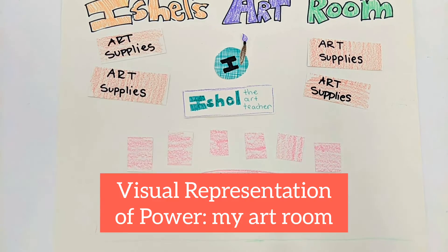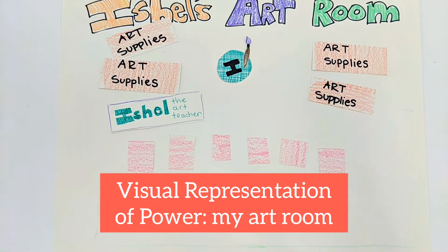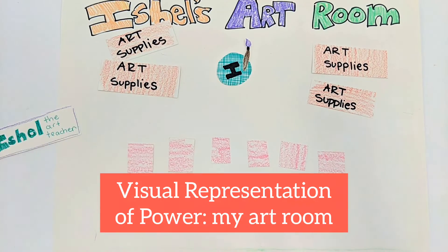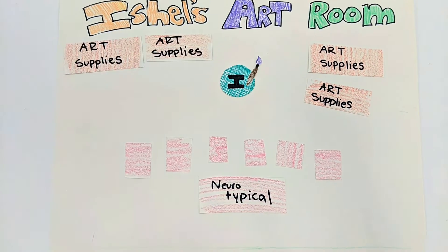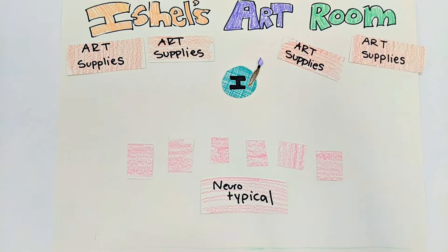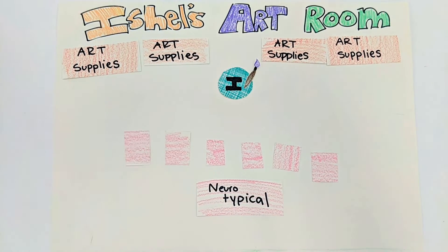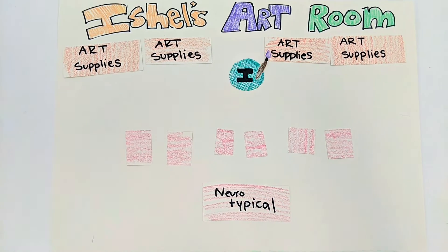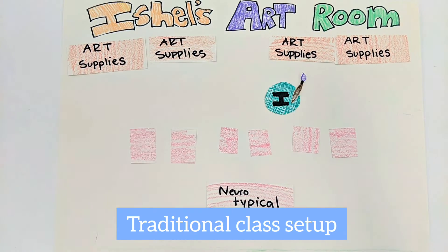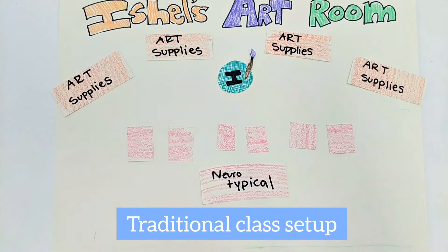A visual representation of power can be my art room. This seating chart feels stuffy and stiff. I am at the front, students are sitting, and the supplies are behind me.